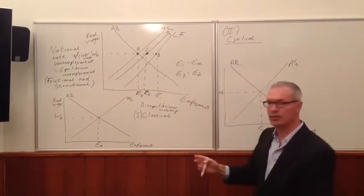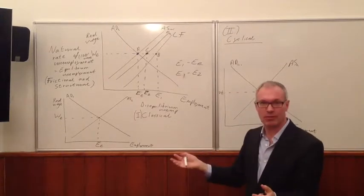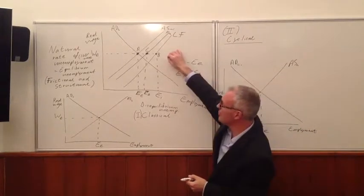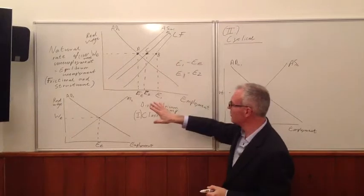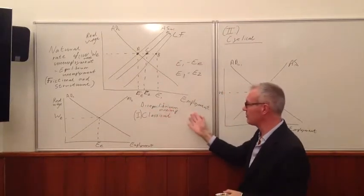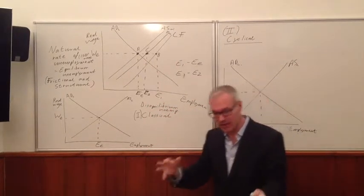And now we come to two types of disequilibrium unemployment. This is equilibrium unemployment, and we're going to look at two types of disequilibrium unemployment. The first type is classical unemployment.